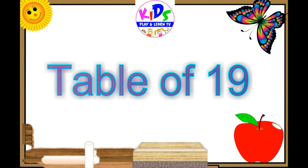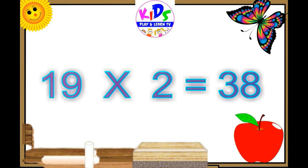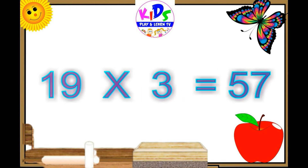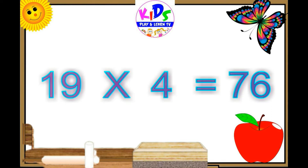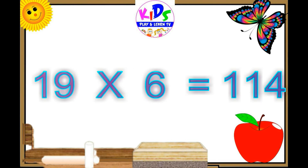Hello, let's learn the table of nineteen. Nineteen ones are nineteen, nineteen ones are nineteen. Nineteen twos are thirty-eight, nineteen twos are thirty-eight. Nineteen threes are fifty-seven, nineteen threes are fifty-seven. Nineteen fours are seventy-six, nineteen fours are seventy-six. Nineteen fives are ninety-five, nineteen fives are ninety-five. Nineteen sixes are hundred and fourteen.